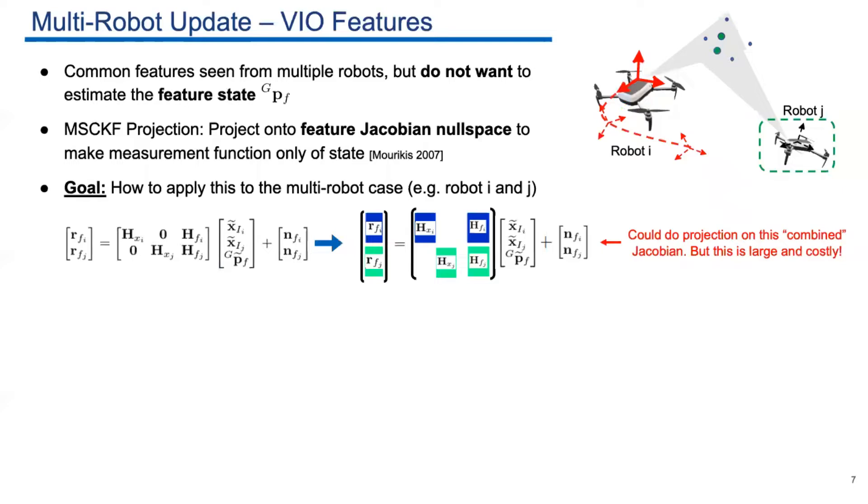The first is the VIO features. These features are the ones that can be tracked only for a short time. So we do not want to estimate the feature's position. We achieve this by using MSCKF projection. But how to apply this to the multi-robot case? Here we give an example, consider robot i and robot j observing the same feature. And we have a combined system. In a naive way, we can do null-space projection on the Jacobian of the feature, and then get a system that is independent of the feature. But the problem is that the resulting system is still very large. It is costly.